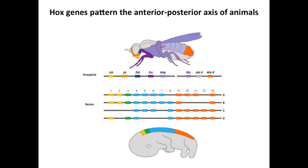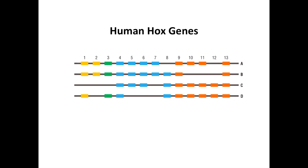We can trace the evolution of gene families like the Hox genes by mapping the genes onto a phylogenetic tree of the species of interest. For example, let's take a look at Hox genes in vertebrates like ourselves. When we look at humans, we find Hox genes clustered together in four different chromosomal locations in our genome. Each cluster of Hox genes contains varying numbers of genes, indicating there have been duplications and losses of different genes in different clusters. Based on sequence similarities, the Hox genes can be classified into four main types, indicated by the different colours here.